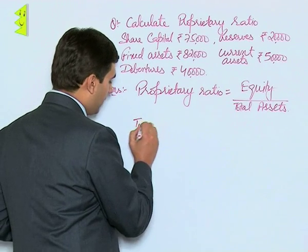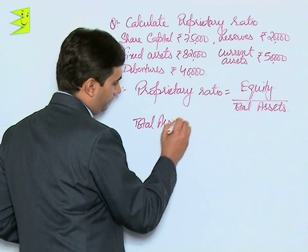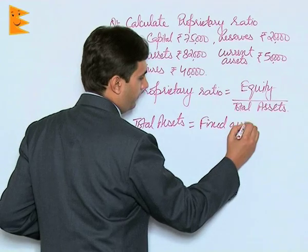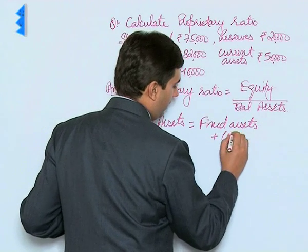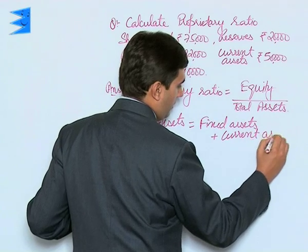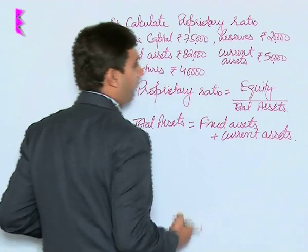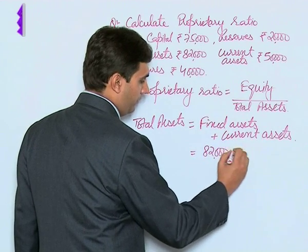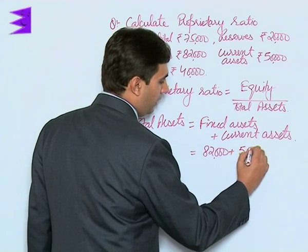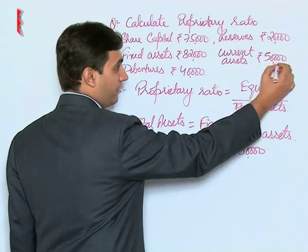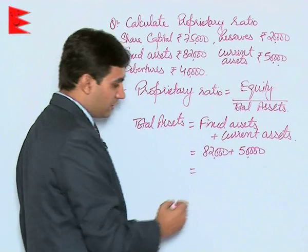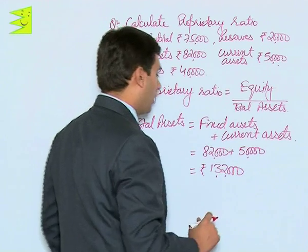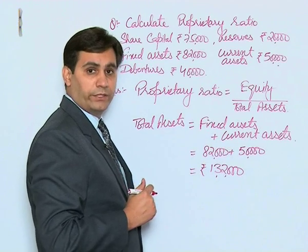First, let us calculate total assets. Total assets are equal to fixed assets plus current assets, which is equal to eighty-two thousand plus fifty thousand. The total of these two is rupees one lakh thirty-two thousand. So we have total assets of one lakh thirty-two thousand.